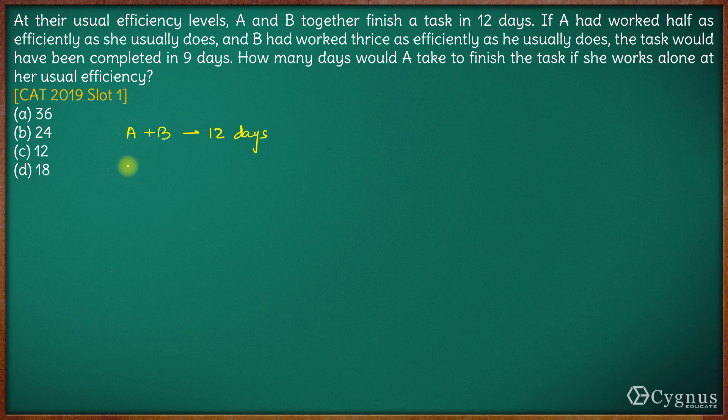If A had worked at half the efficiency and B had worked at thrice the efficiency, now in this case, the work will get completed in 9 days itself. So the task would be completed in 9 days.